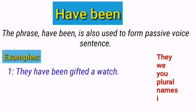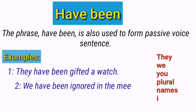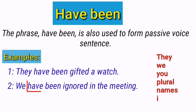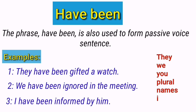They have been gifted a watch. 'Have been' is used with the subject 'they,' and it is a passive sentence because the subject did not perform the action — the action of gifting a watch was done to them. We have been ignored in the meeting. Again, 'have been' is used with 'we,' forming the passive structure of present perfect tense. I have been informed by him. Here 'have been' is used with the subject 'I,' and it is a passive sentence.